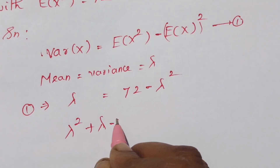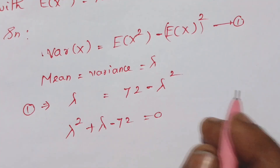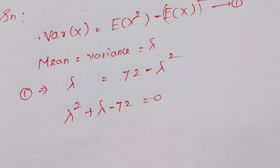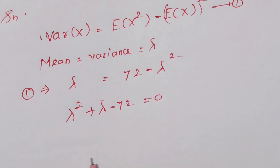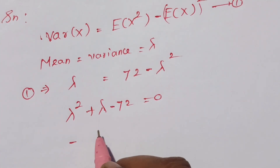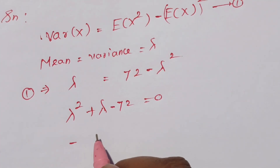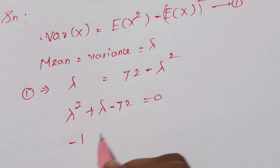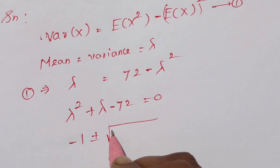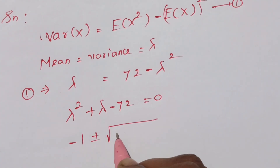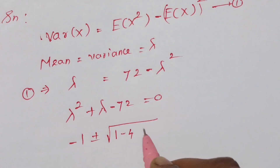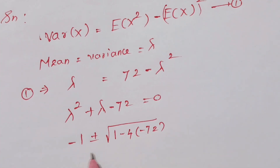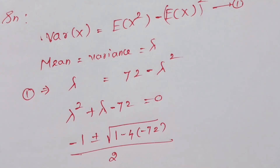Lambda squared plus lambda minus 72 equals 0. Now apply normal factorization — use the quadratic formula: minus b plus or minus root of b squared minus 4ac, divided by 2a. So, minus 1 plus or minus root of 1 minus 4 times 1 times minus 72, divided by 2 into 1.